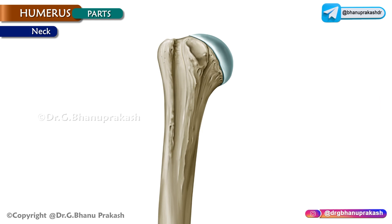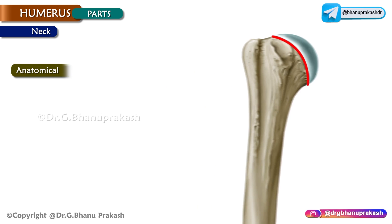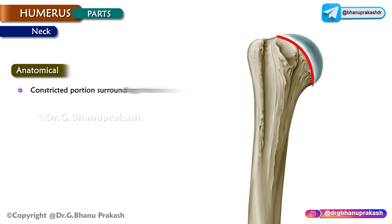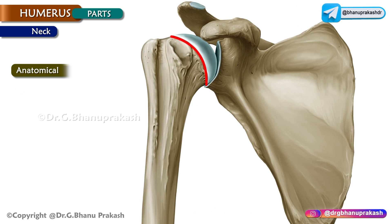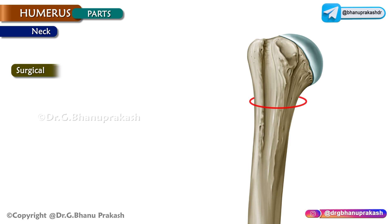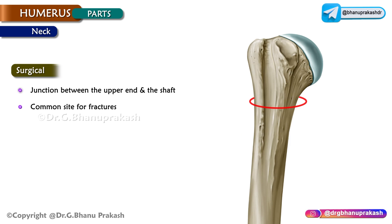There are two necks: anatomical and surgical. The anatomical neck is the constricted portion surrounding the head; it gives attachment to the capsule of the shoulder joint except inferomedially. The surgical neck is the junction between the upper end and the shaft and is a common site for fractures.